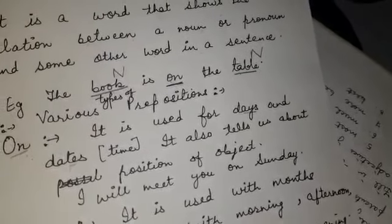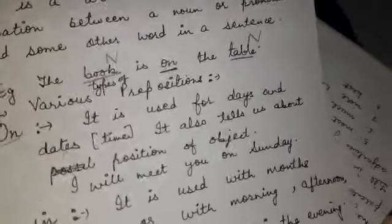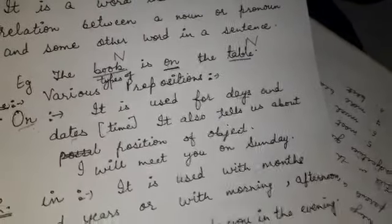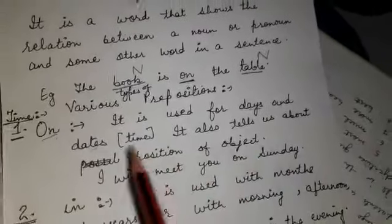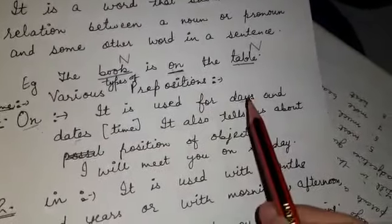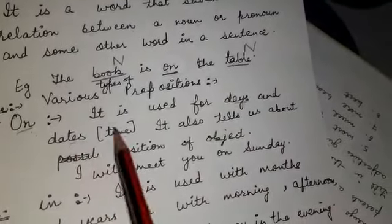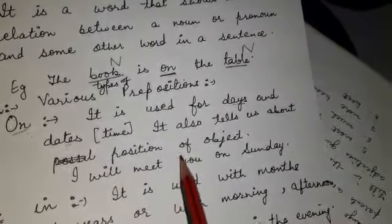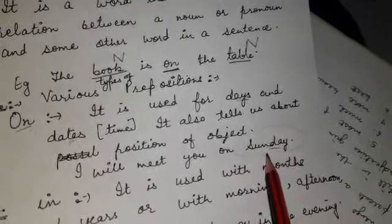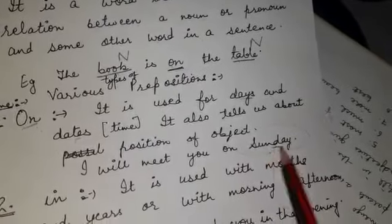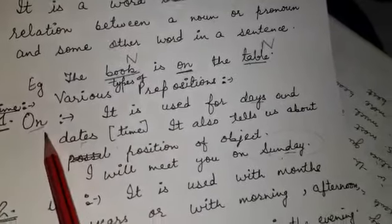But now I am only discussing about time — time ke baare mein kaunsi prepositions aati hain. ON, days or dates ke baare mein batata hai. Like: I will meet you on Sunday. Sunday is a day. Sunday ko milunga. Days or dates ke baare mein ON batata hai.